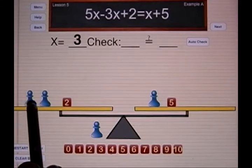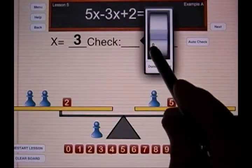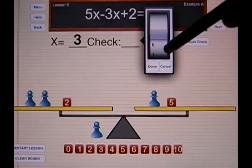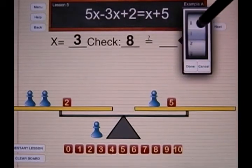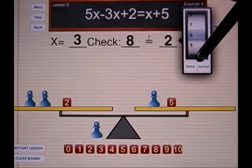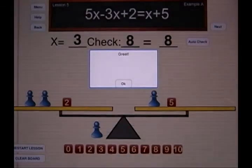Now if x is three, I'm going to have three, and three is six, and two is eight. So this side will have a value of eight, and this side three and five will be eight. So both sides do have the same value.